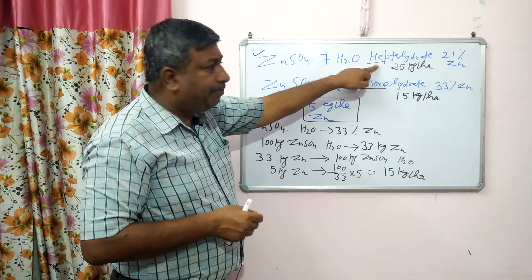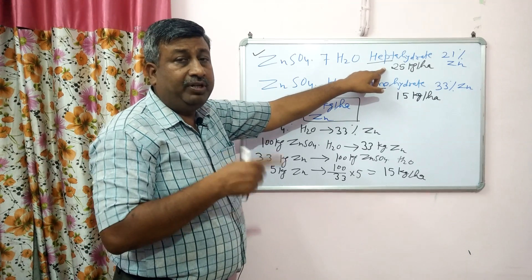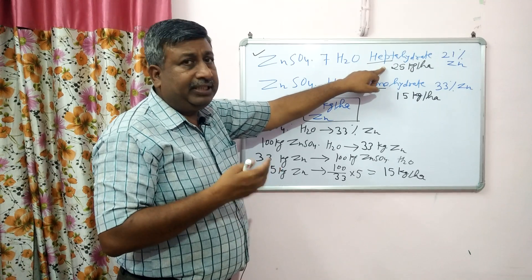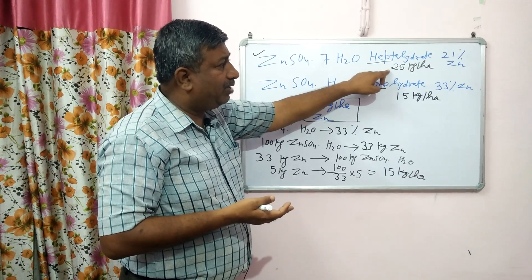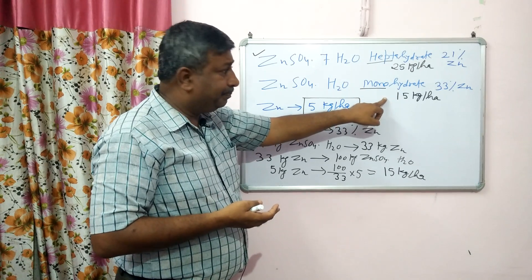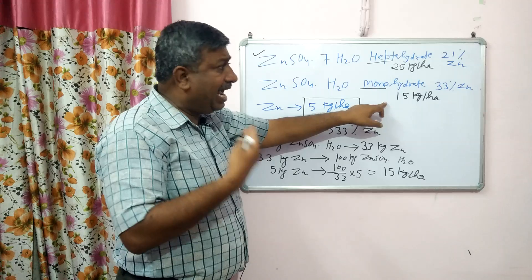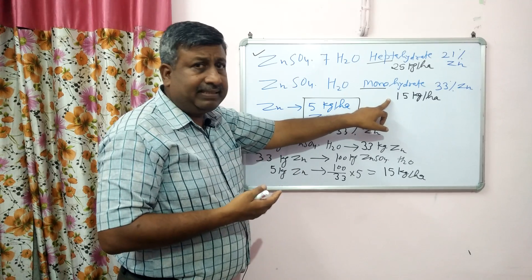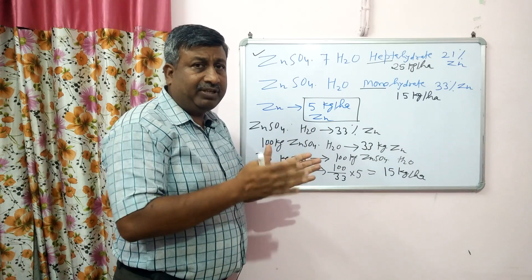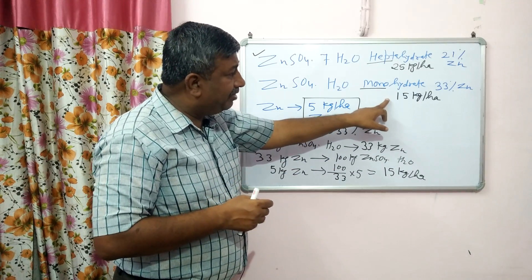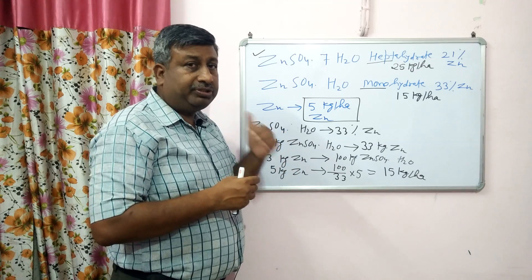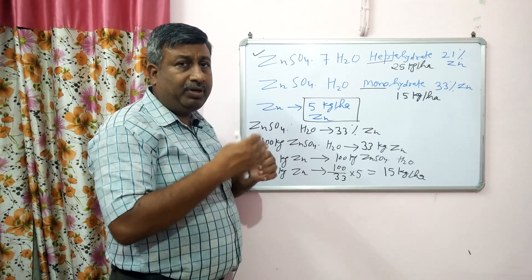If you are applying 15 kg of heptahydrate but the requirement is 25 kg, it will not fulfill the crop requirement. Similarly, if we apply monohydrate at 25 kg per hectare, we are applying excess zinc. This excess zinc will hamper the availability of other nutrients, particularly phosphorus, because zinc and phosphorus have an antagonistic effect.